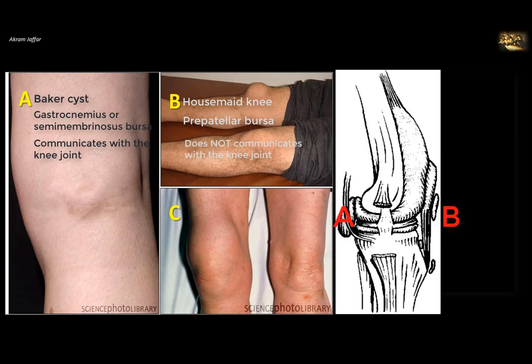Picture E shows inflammation of the suprapatellar bursa, located above the knee joint between the femur and the tendon of quadriceps femoris. It extends approximately four finger-breadths above the base of the patella, representing a normal upward extension of the knee joint cavity. It is held upward by a few muscle fibers from vastus intermedius called the articularis genus muscle. The suprapatellar bursa is therefore in natural continuity with the knee joint.